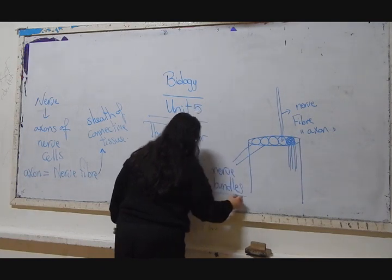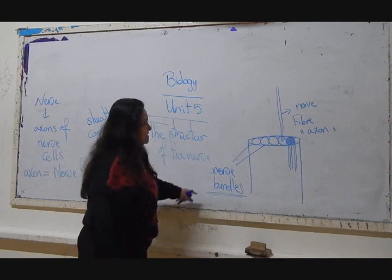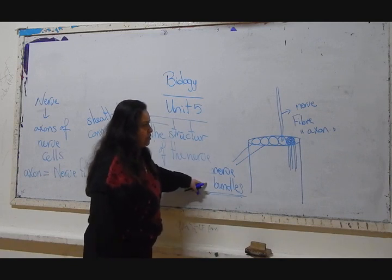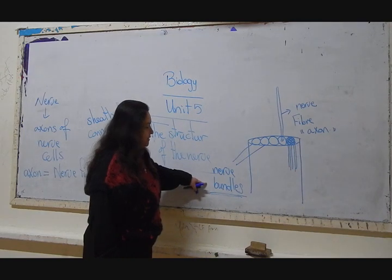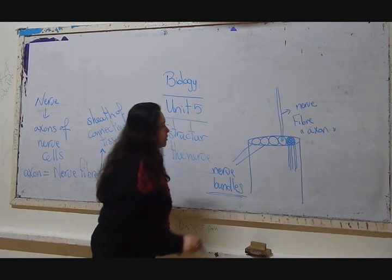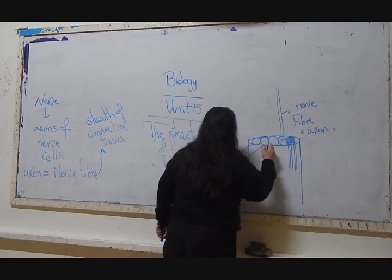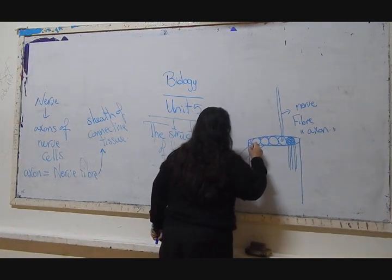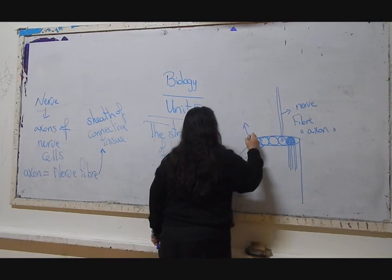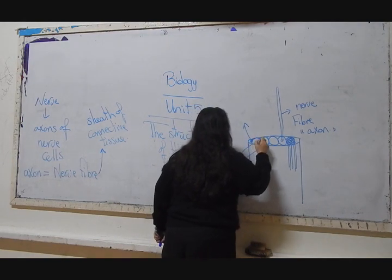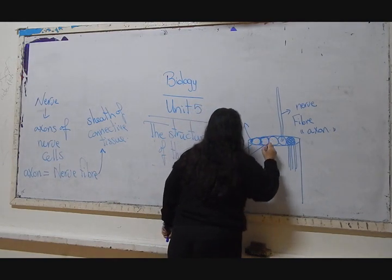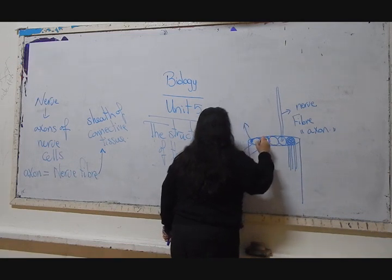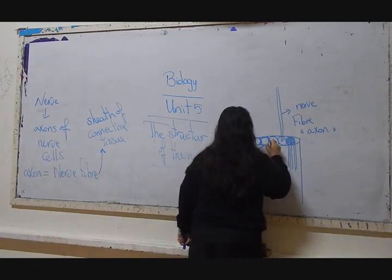What is the nerve bundle? It is a group of nerve fibers or a group of axons of nerves. These bundles are covered by what we call sheaths. These sheaths isolate each bundle from the other.